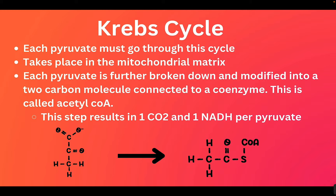As we get started in the Krebs cycle, the pyruvate has to go through a processing step. It's going to be broken down and modified into a two-carbon molecule connected to a coenzyme, giving us what's called acetyl-CoA. At the beginning we have our three-carbon pyruvate, then we break off a carbon, so now we have two carbons and we have acetyl-CoA. This intro step results in one carbon dioxide being released per pyruvate and one NADH. Since we do this with two pyruvates, you will ultimately have two carbon dioxides and two NADHs as a result of this step.